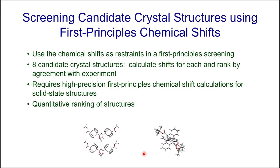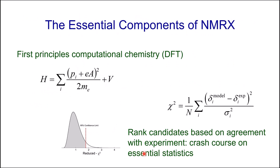Our approach is to use these restraints in a first principles screening: we have eight candidate crystal structures, we calculate shifts for each and rank them by agreement with experiment. This requires high precision first principles chemical shift calculations for solid state structures and a way to quantitatively rank these structures. We need to predict molecular properties — most importantly chemical shifts — with high precision and accuracy, and we can't ignore proper statistics, so we'll have a crash course on essential statistics for NMR crystallography.